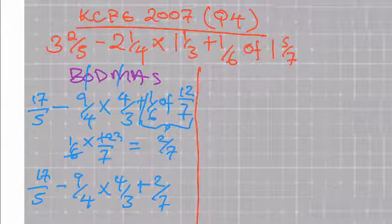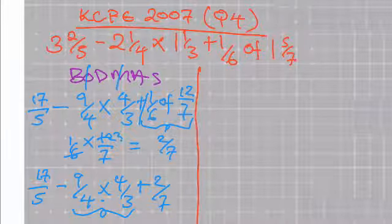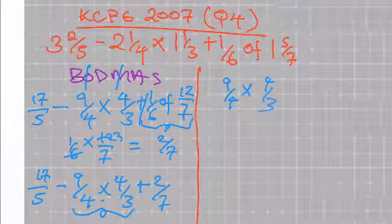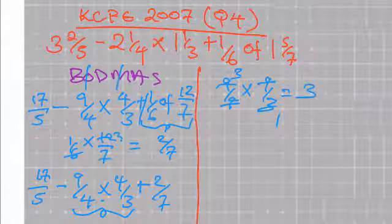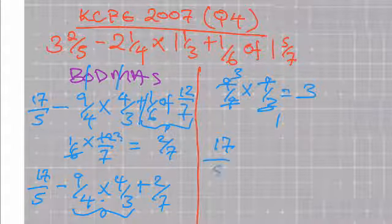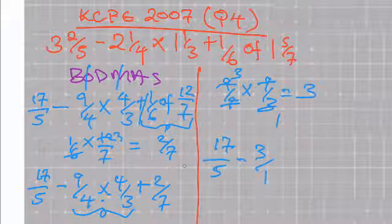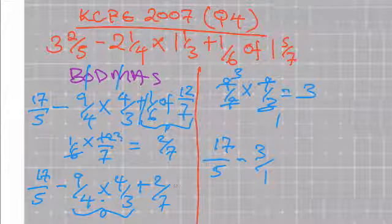Next is multiplication. I will multiply 9 over 4 multiplied by 4 over 3. The 4 goes with the 4, and 3 goes there 3 times, so I remain with an answer of 3. Finally, my equation becomes 17 over 5 minus 3 over 1 plus 2 over 7.